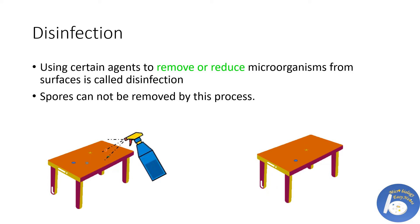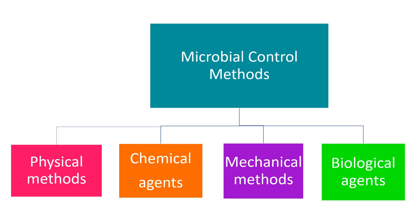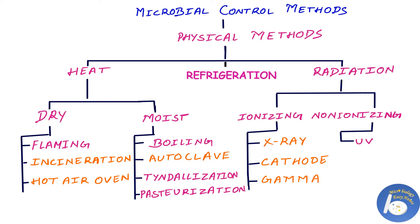If you want to know the difference among sterilization, disinfection, decontamination, and antisepsis, there is a link above. Control of microbial growth is essential in the medical field, research field, food manufacturing units, or any other place where microbes may cause contamination. There are four methods to control them: physical methods, chemical methods, mechanical methods, and via biological agents. In this video we will consider how we can control microbes via physical methods.